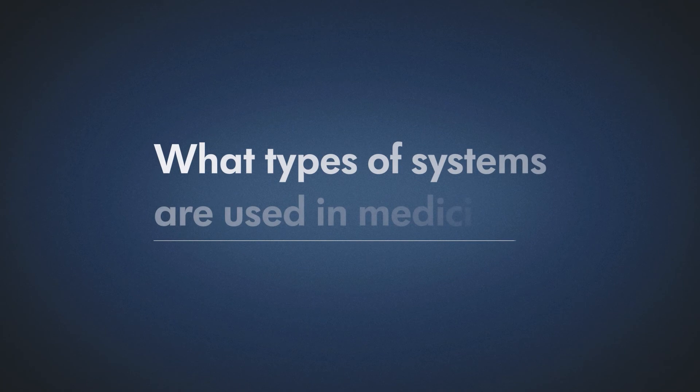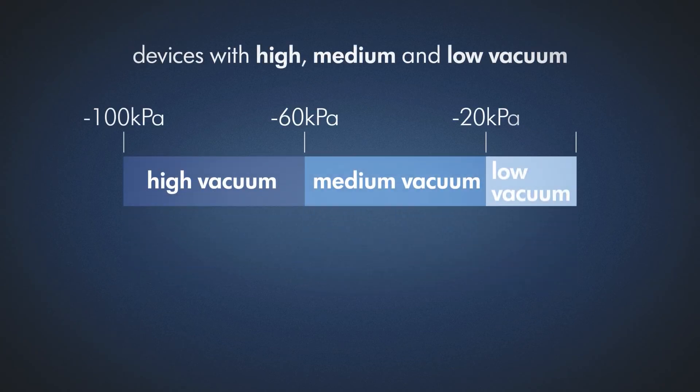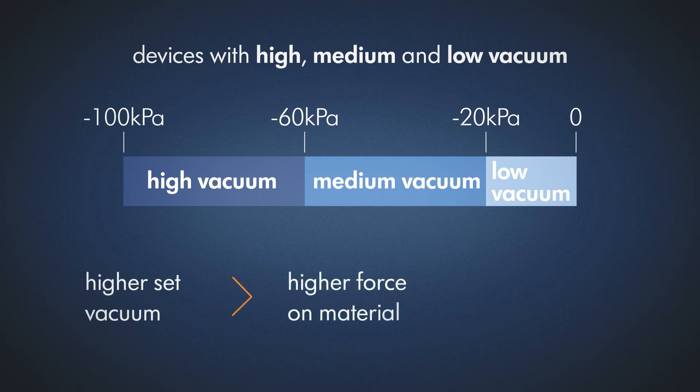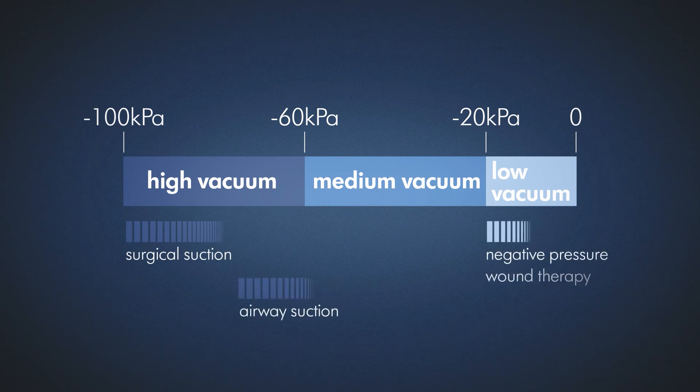What types of systems are used in medicine? A distinction is made between devices with high, medium or low vacuum. The higher the vacuum is set, the higher the force acting on the material to be drained, and the higher the suction. Depending on the vacuum strength, Medela pumps are used in different settings whenever extraction is required.